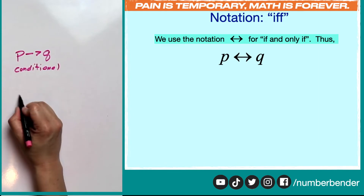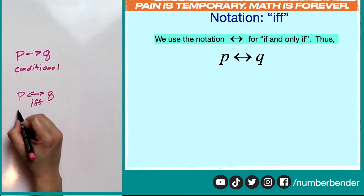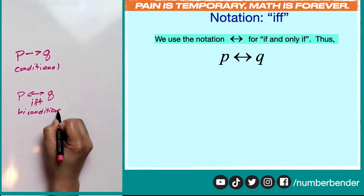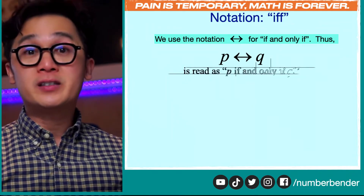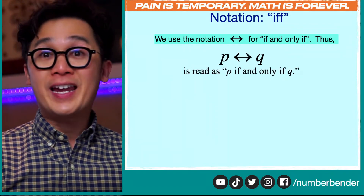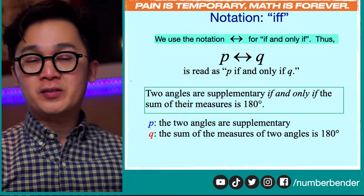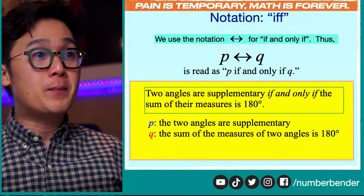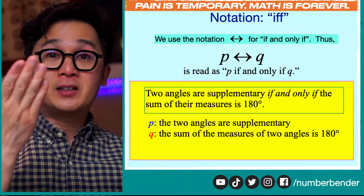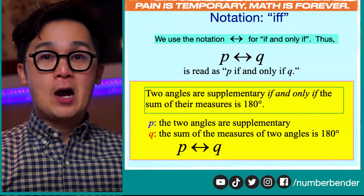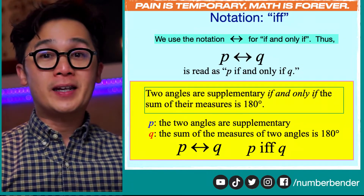For our biconditional statement, we use the two-sided arrow (↔). This is our 'if and only if' or biconditional statement notation. Whenever you see these two arrows, it means we are using a biconditional statement or the verbal operation 'if and only if.' This notation reads the same as our previous example in verbal form: two angles are supplementary if and only if the sum of their measures is 180 degrees. So P if and only if Q can be written in symbol form as P ↔ Q.